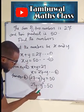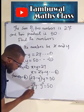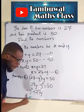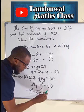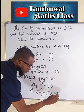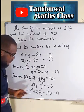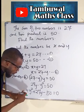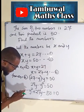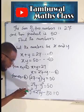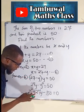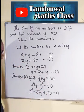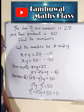We rearrange this equation: negative y squared plus 27y, and if 50 crosses over it becomes negative 50, equal to 0. We can further rearrange by multiplying each term by negative 1 to eliminate the negative sign: negative y squared becomes positive y squared, plus 27y becomes minus 27y, and negative 50 becomes positive 50, giving y squared minus 27y plus 50 equals 0.